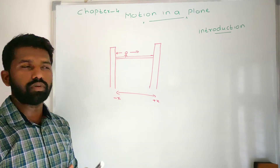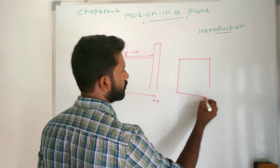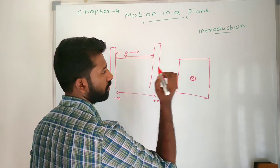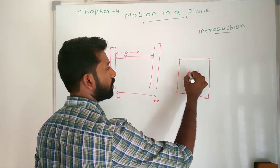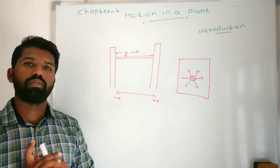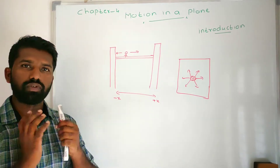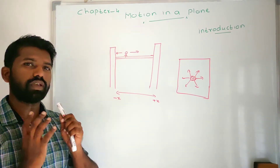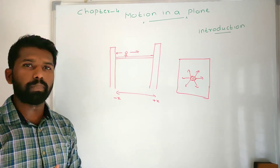But this method is not applicable here, because in plane motion the body has many more possibilities. In a plane, a football can move in so many directions — not just two. So this positive/negative sign method is not applicable for motion in a plane. Therefore, we are introducing a new concept — that is the vector. By using vectors, we can easily specify the direction of an object when it is moving in a plane.